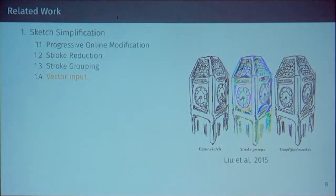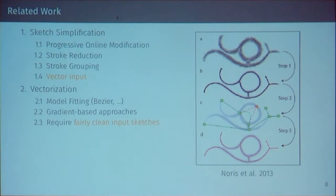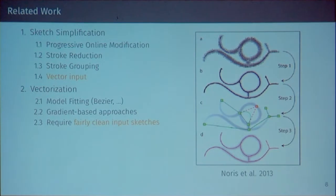There is lots of related work on this topic in the computer graphics community, first on vector-type sketch simplification — progressive online modification, stroke reduction, stroke grouping. Professor Igarashi also did work on this. But this works on vector inputs and outputs, and is not applicable to the general case of rough sketching. There are also vectorization approaches whose goal is to convert a raster image into a vector representation, allowing unlimited scaling and easy editing — mainly based on Bezier curve fitting using image gradients — but these still require fairly clean input sketches.